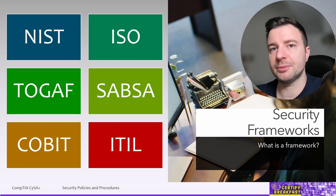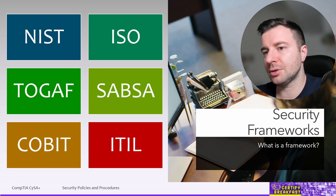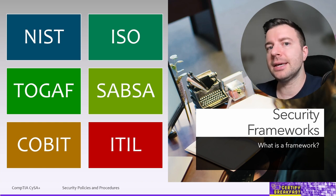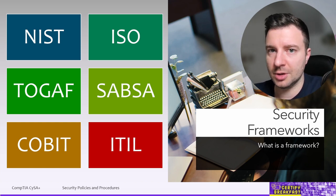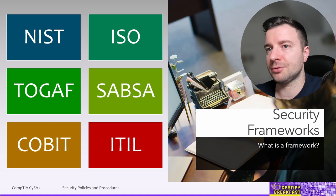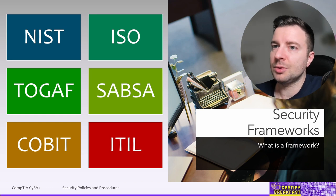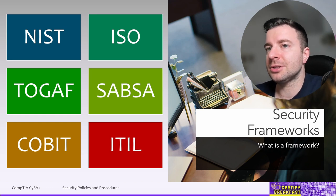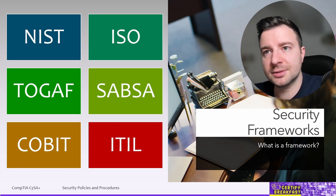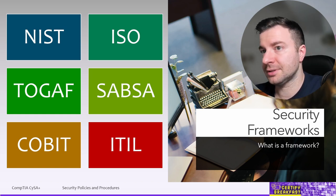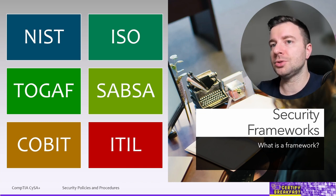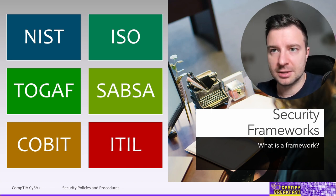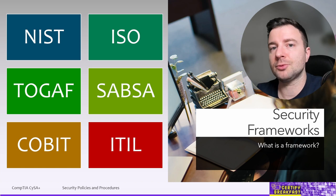SABSA is about information assurance and also risk analysis. COBIT is an IT governance framework specifically focused on security. Finally, ITIL includes best practices for aligning IT and business, also touching on security. We also have ESA — Enterprise Security Architecture frameworks — which are entire lists of activities and objectives that a company follows in order to reduce and mitigate risk.